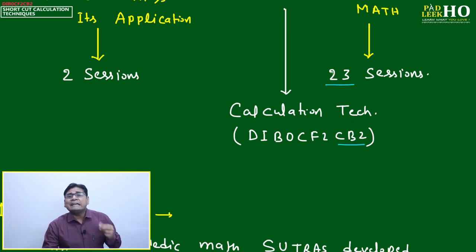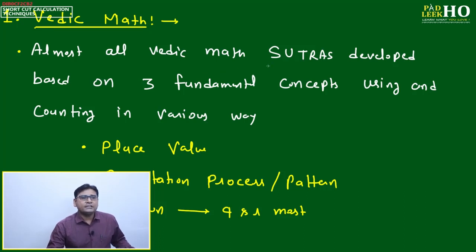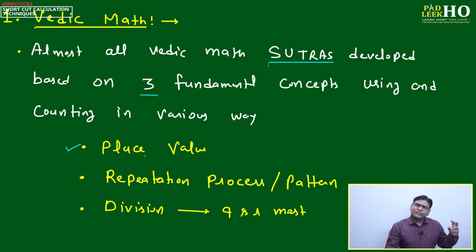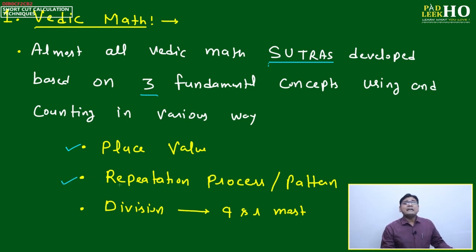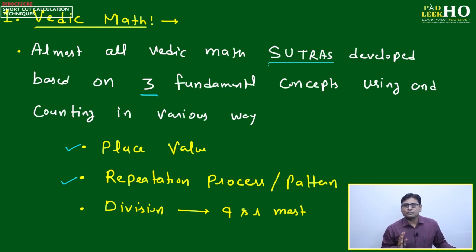Basic math sutras are almost all developed based on three fundamental concepts of counting. The first and most important is place value — it's about understanding math in a different way than the Western math we learned in school. The second is the repetition process, and the third is the division process. These three are the pillars of Vedic math.